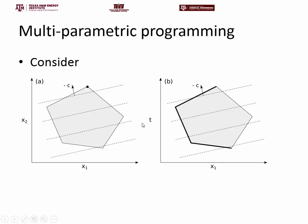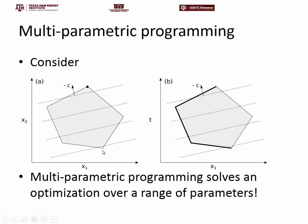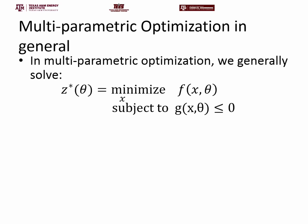What we're interested in now is: what happens if we look for the parametric solution along x2? How does the solution change as a function of theta? If we do that, suddenly what we get are planes which are nothing other than the optimal optimizers over this polytope. This is the key point: multi-parametric programming solves an optimization problem over a range of parameters.